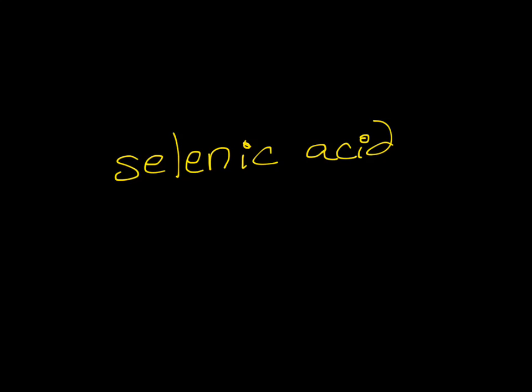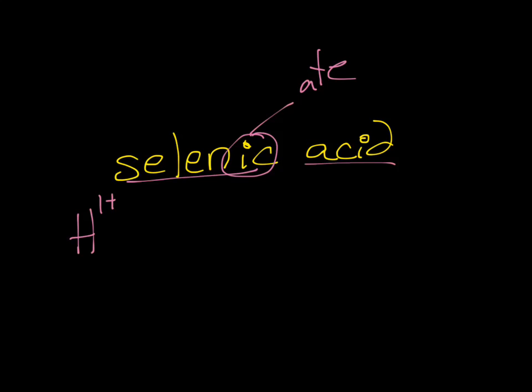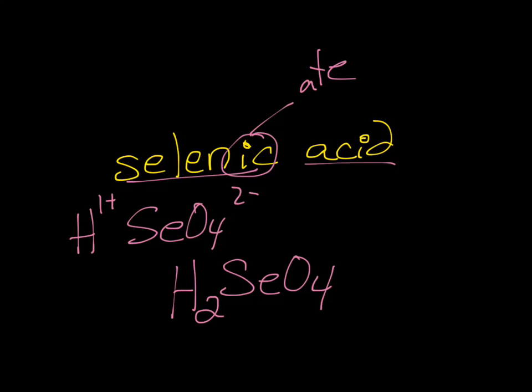How about one more: selenic acid? Acid tells us it starts with H1+. Since there's no "hydro" prefix, the anion is not off the periodic table — it must be a polyatomic. The "-ic" suffix with no "hydro" is the rule for "-ate," so the anion is selenate. Selenate is SeO4 with a 2− charge. To neutralize H1+ with SeO4 2−, we need H2SeO4. So selenic acid is H2SeO4.